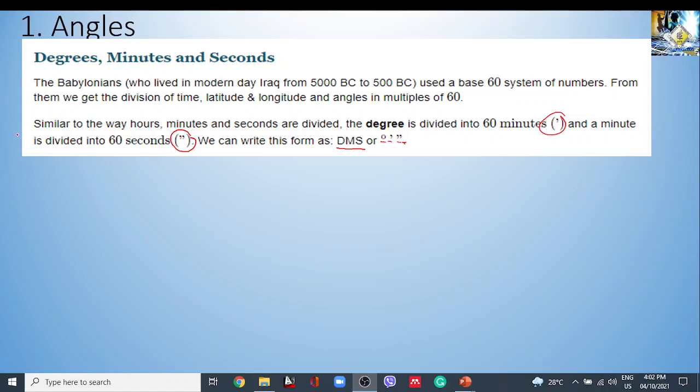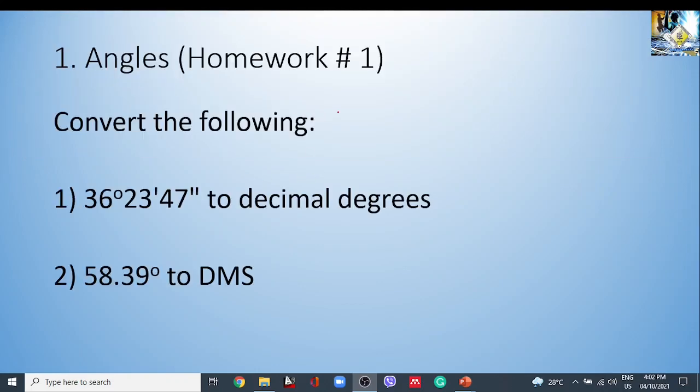So this is a hint. This portion is a hint for your homework, your homework number one. So for your homework number one, under angles topic, homework number one, you need to convert the following. Number one, 30 degrees, 23 minutes, and 47 seconds, you need to convert it into decimal degrees. And for problem number two, you need to convert the 58.39 degrees into a DMS format. So I'll share the link for where you can upload your homework number one.